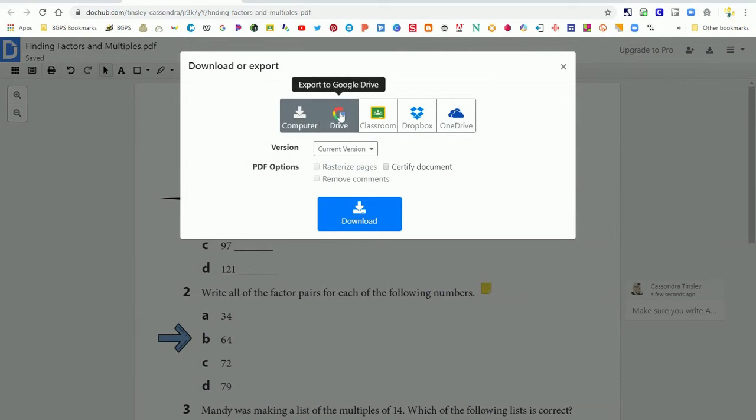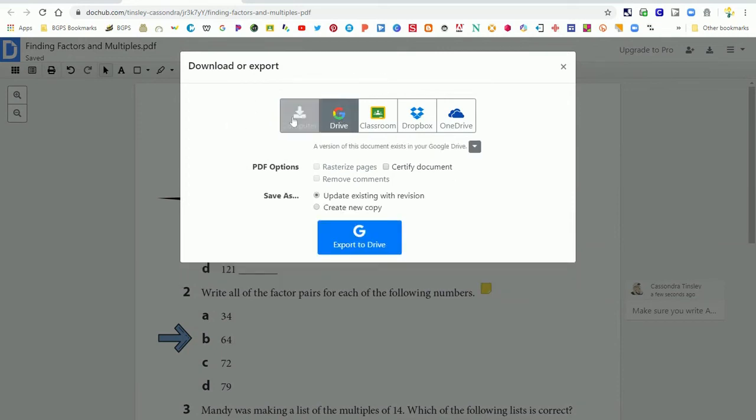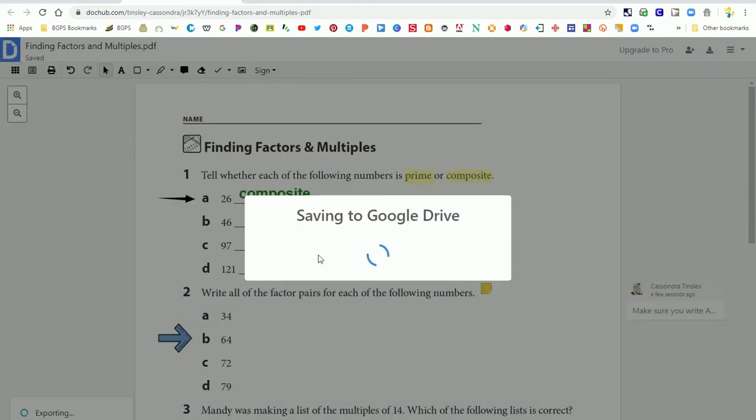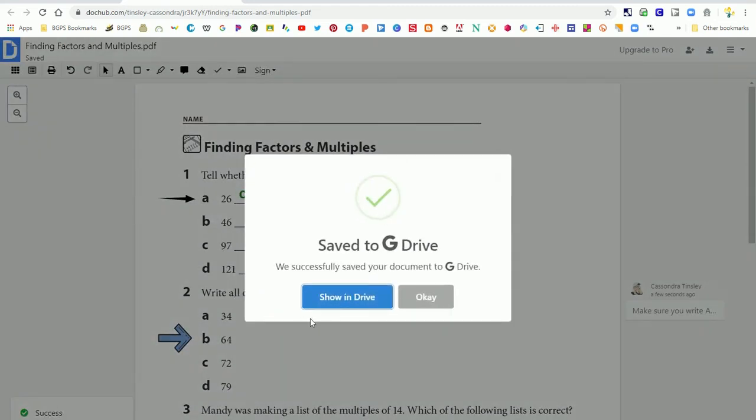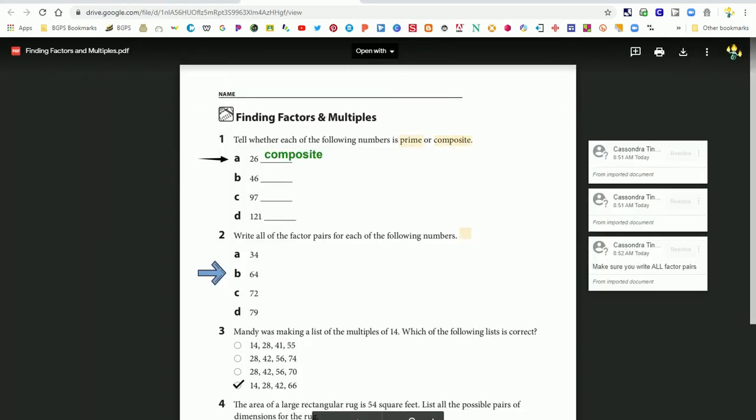So in the top right there is the download and export button that looks like the download arrow. Then exporting to Google Drive is the best option and it will save your copy with all of your edits in your drive and it will look like this with everything auto saved as you go and saved to this version.